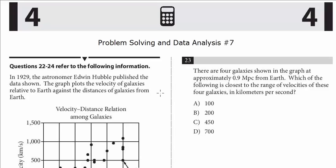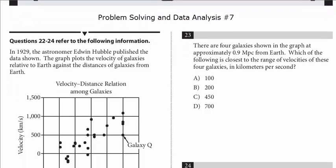All three of these questions refer to the following information. In 1929, the astronomer Edwin Hubble published the data shown. The graph plots the velocity of galaxies relative to the Earth against the distances of galaxies from Earth. So, let's take a look at the graph.